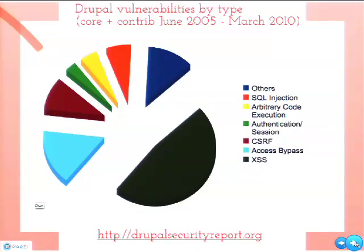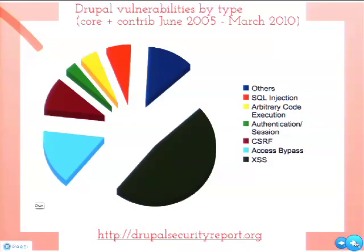Let's talk about the types of problems usually found in Drupal. There's a chart from the Drupal Security Report showing a breakdown of problems for both core and contrib from 2005 to 2010. Cross-site scripting is the most common vulnerability in Drupal modules. That's different from other frameworks where SQL injection is typically the most dominant one — but the Drupal database API is so good that people don't have too many problems with it.